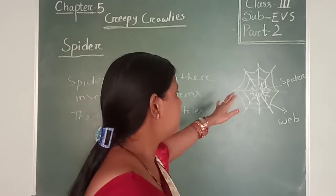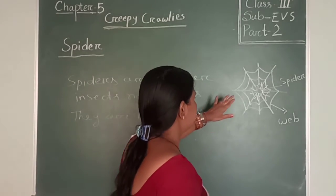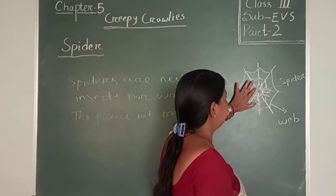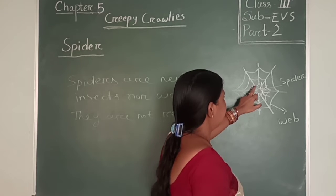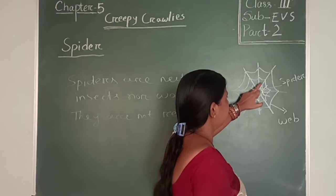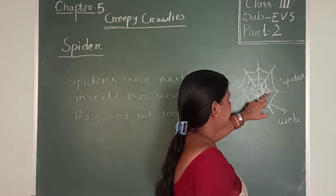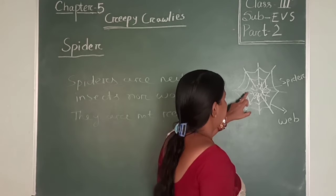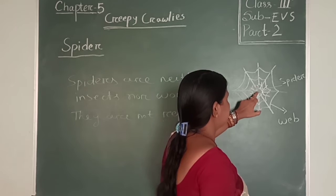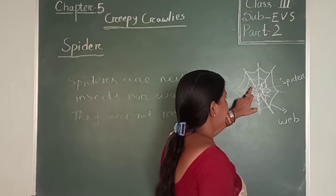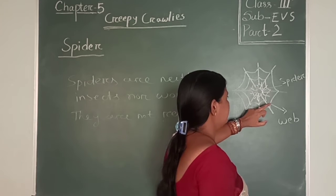Spider have two parts. Spider body is divided into two parts and they have eight legs — one, two, three, four, five, six, seven, eight. They have eight legs. This one is a spider. They have their body divided into two parts and they have eight legs.